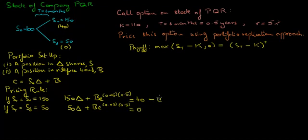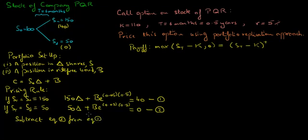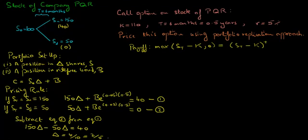Let's call these equation one and equation two. We have two equations and two unknowns, delta and b. Subtracting equation two from equation one, we get 150 delta minus 50 delta equals 40. Solving for delta, we get delta equals 4 over 10, which equals 2 over 5. We now know the value of delta, which is the number of stocks we need to go long. We can insert this into either equation to solve for the bond position b.